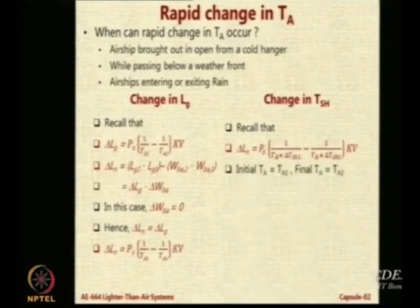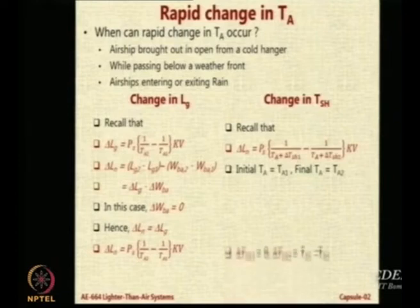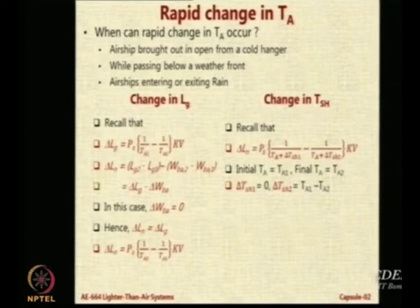Now initially the airship is at T_A1 and suddenly it goes at T_A2. Therefore, the ΔT_SH will be 0 to start with and that will be suddenly T_A1 minus T_A2.